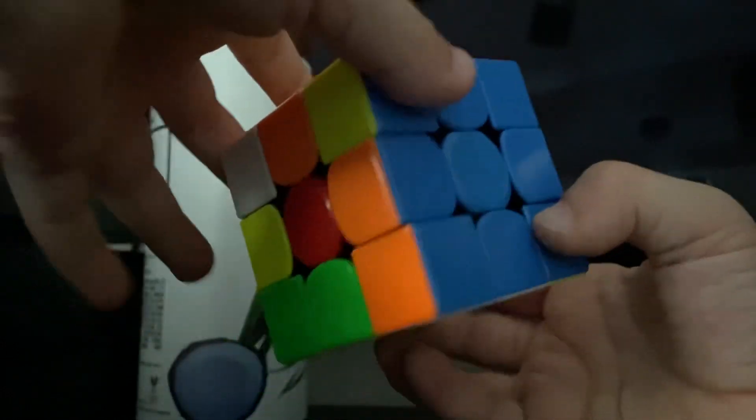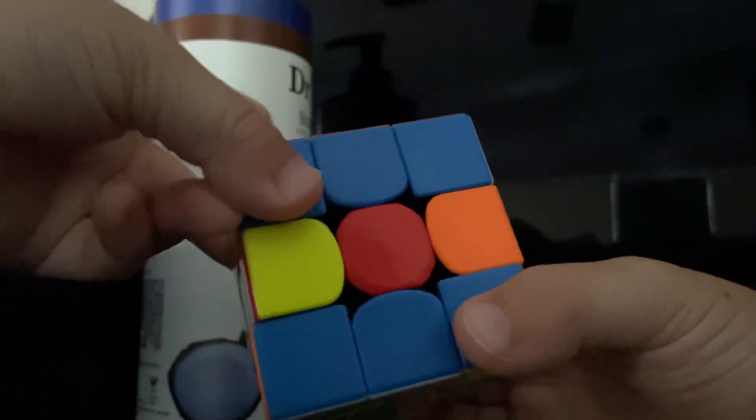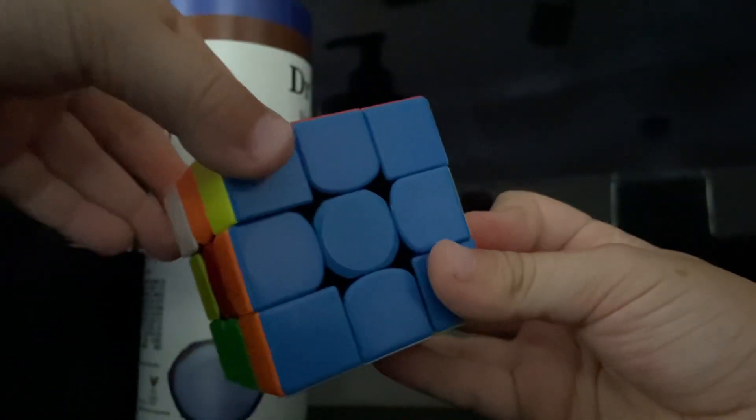But for E, we're actually going to hold it like this, like you're holding a cube like this. So then E, and then we're going to use our index finger over here to move it over here. E, then E'.